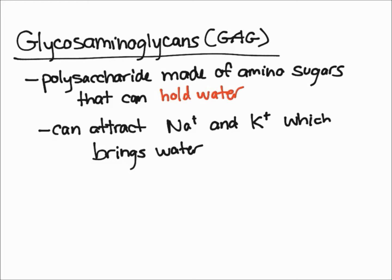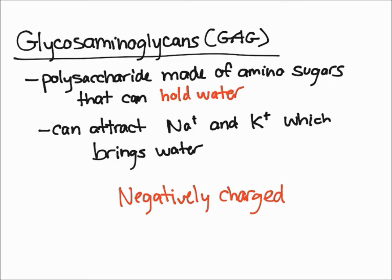GAGs have a role in regulating water balance because they are negatively charged, which means they can attract sodium and potassium ions, and those ions bring water with them. Remember, it's important that GAGs are negatively charged because negative attracts positive — sodium and potassium ions are both positively charged.